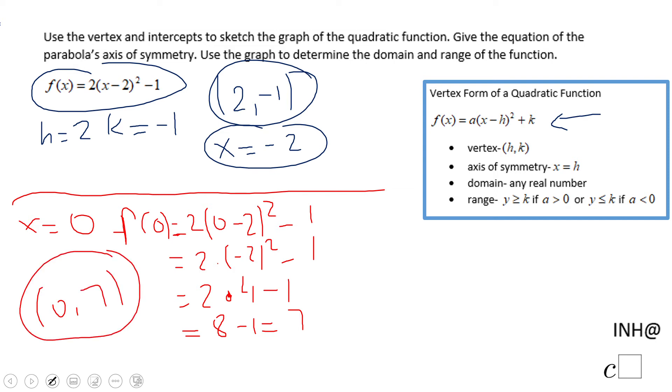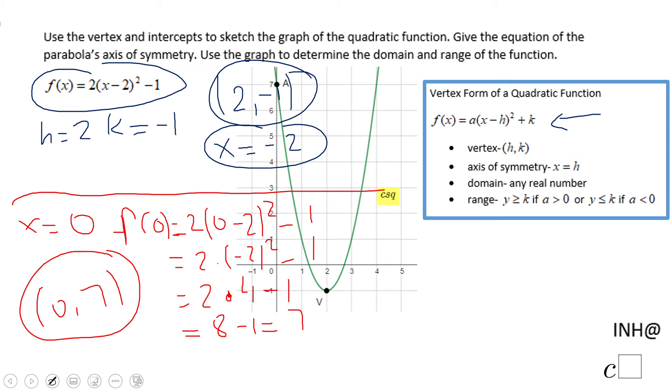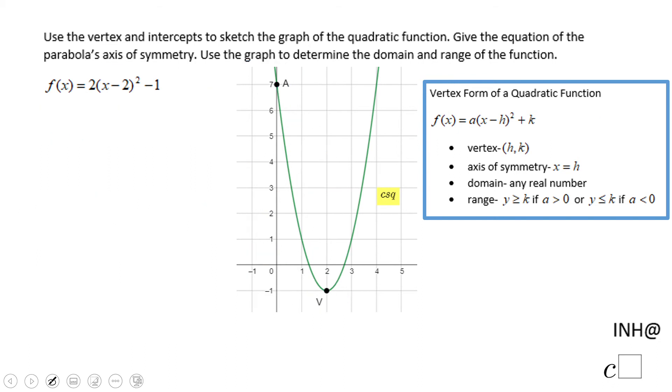Now we have enough information to sketch the graph of this quadratic which you'll see right here. You see that vertex, the y intercept, and this is the axis of symmetry.